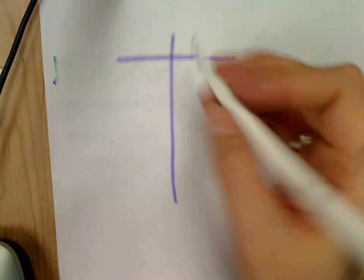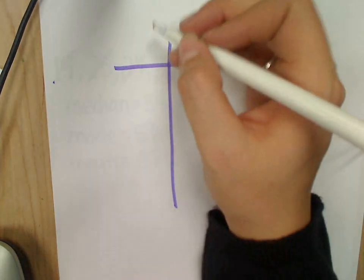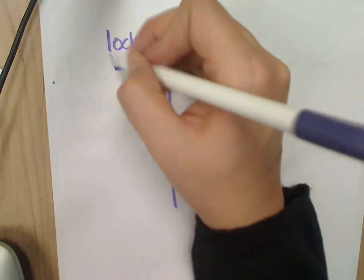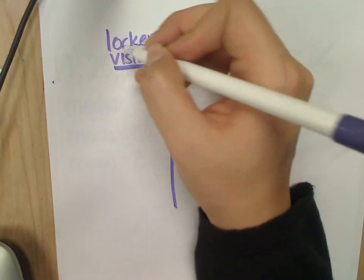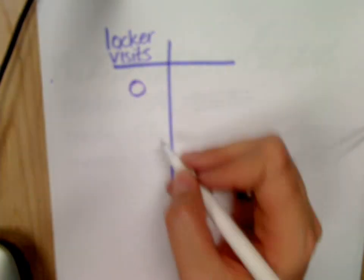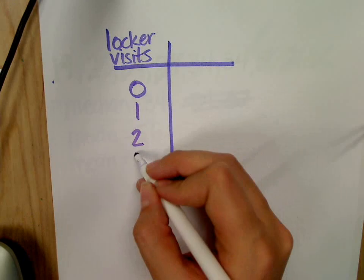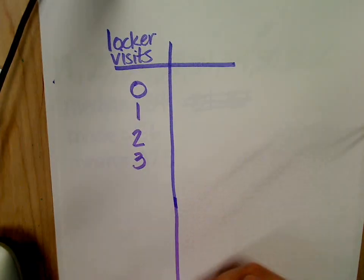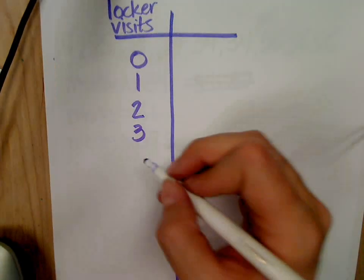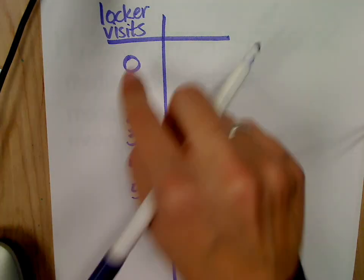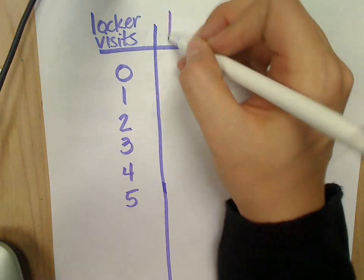What I'm going to do is I'm going to have some tally marks, like this table - a t-chart or whatever. This is the locker visits. Zero is a choice for a locker visit, so is 1, 2, 3. You're going to go all the way until you get to your largest number, which is 10. You can continue to go, but I'm going to put tallies over here.